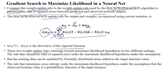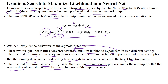These two weight update rules converge towards the maximum likelihood hypothesis in two different settings. The first minimizes the sum of squared error for the maximum likelihood hypothesis under the assumption that training data can be modeled by normally distributed noise added to the target function. The second rule minimizes the cross-entropy, which maximizes the maximum likelihood hypothesis under observed boolean values based upon the probability function of input-output instances.